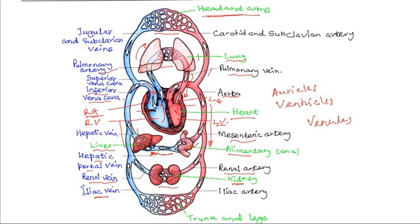Then from the liver, the blood is then taken back to the general circulation through the hepatic vein, which joins the vena cava and eventually back to the heart.